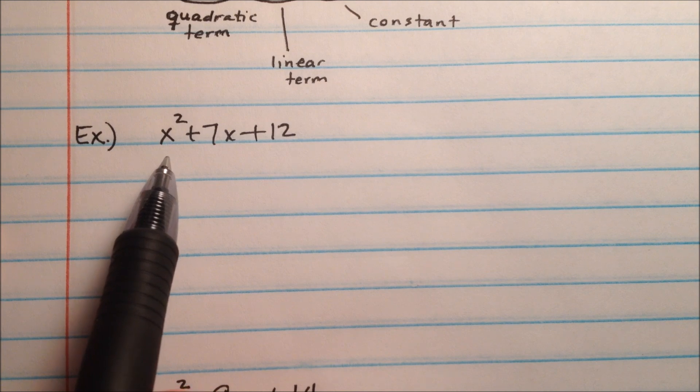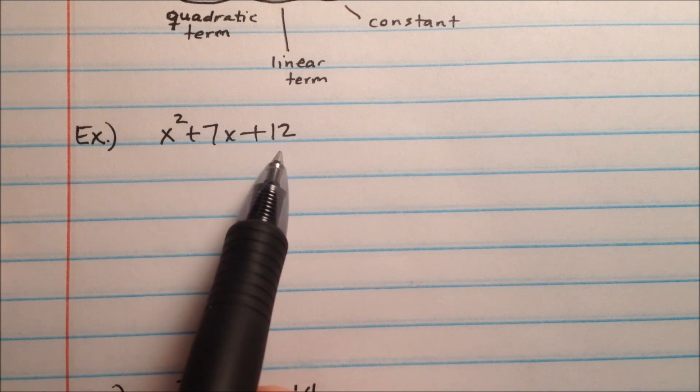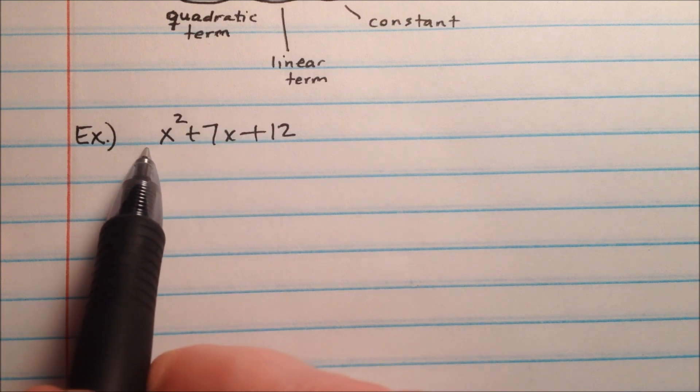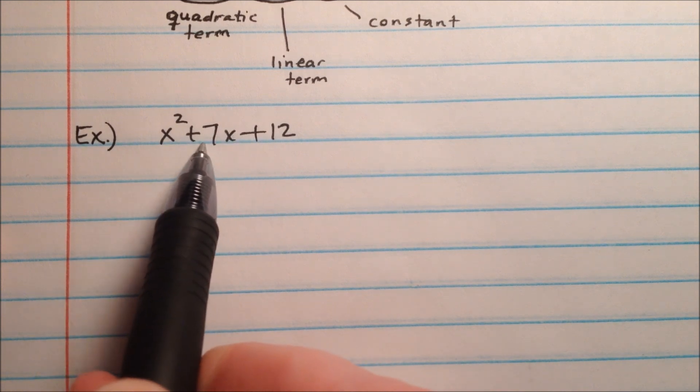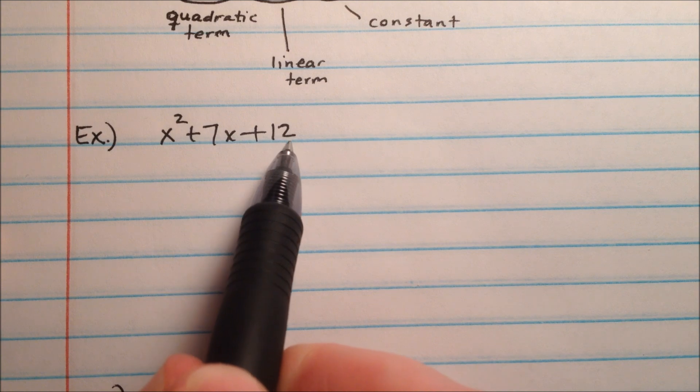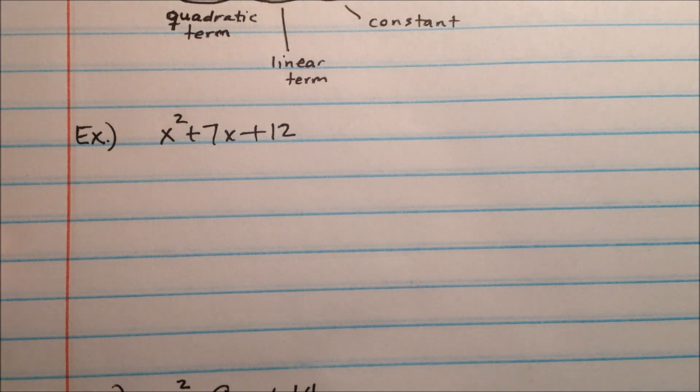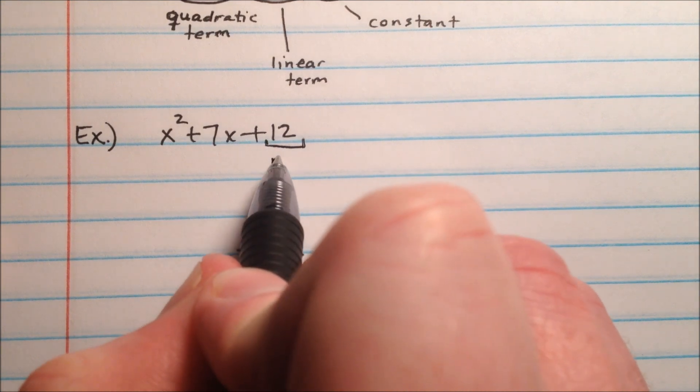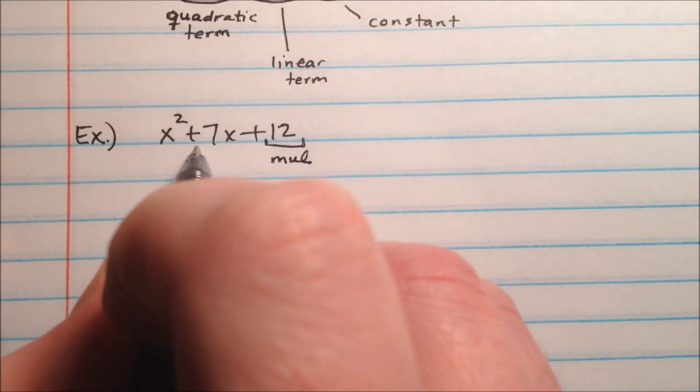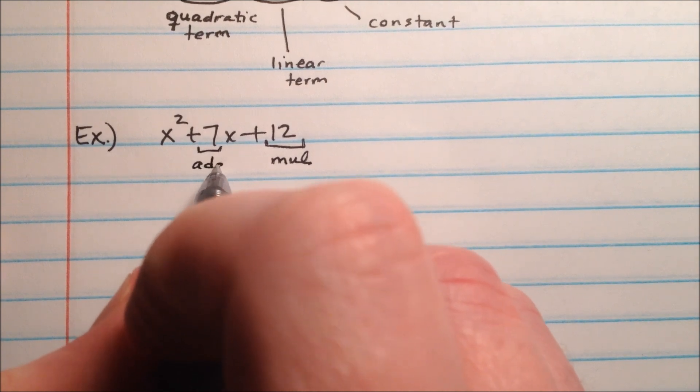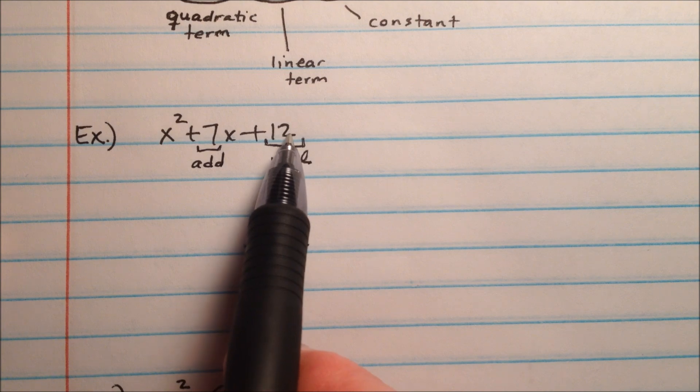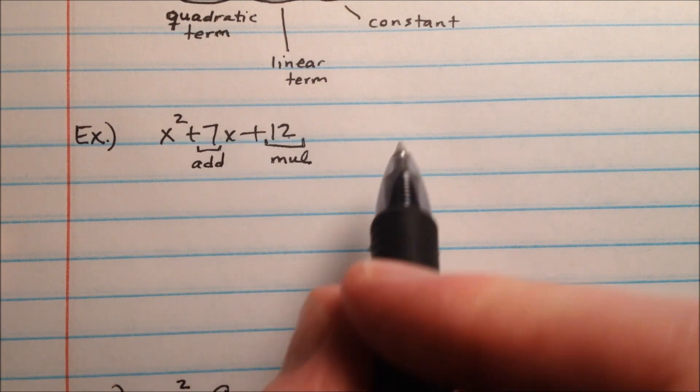So we have in our first example x squared plus 7x plus 12. In this example, our quadratic term is just x squared, our linear term is 7x, and our constant is going to be 12. So here's how this is going to work. We're looking for numbers that are going to multiply to make our constant, or in our case 12, who add to make our linear term, which is 7.